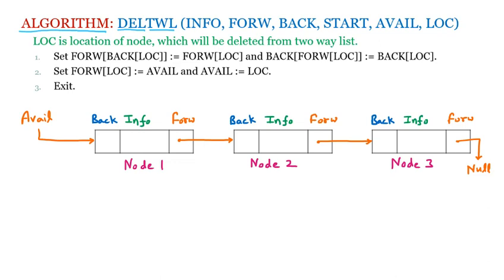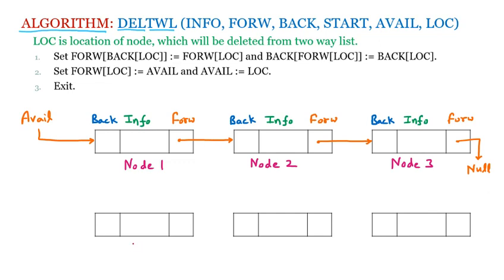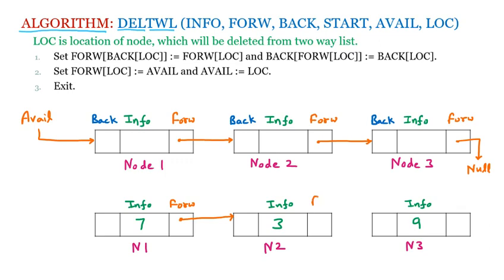We have three free memories available in the AVAIL list. Now we are creating our own list on which we apply the operation, taking three nodes: N1, N2, and N3. Each node has an info part. Let's say we are storing 7, 3, and 9 in those nodes. The forward pointer of each node points to the next node's address, with node 3's forward pointing to null.